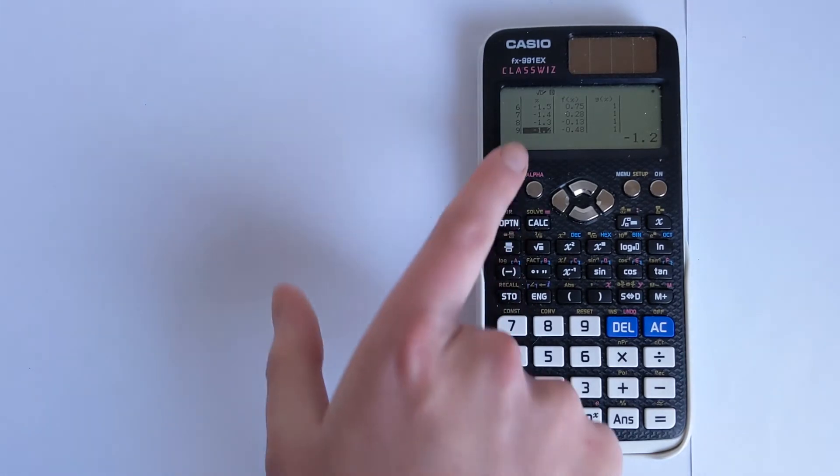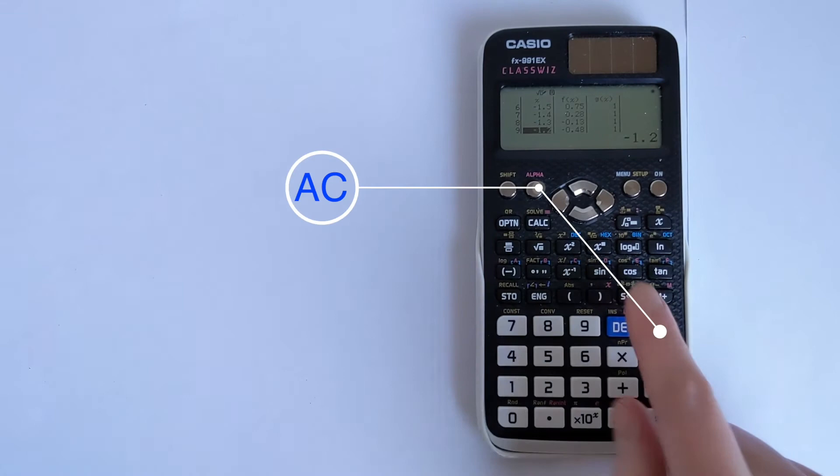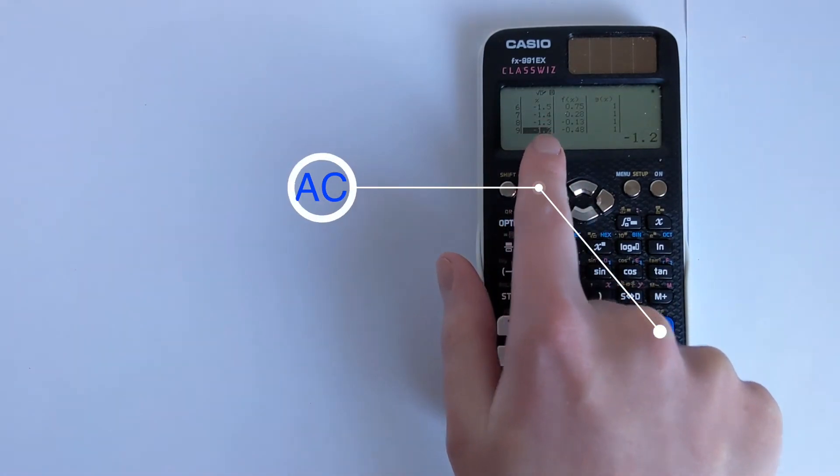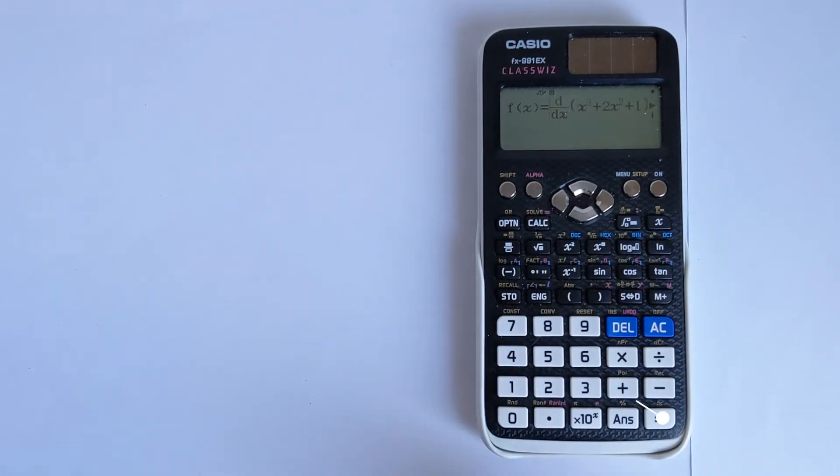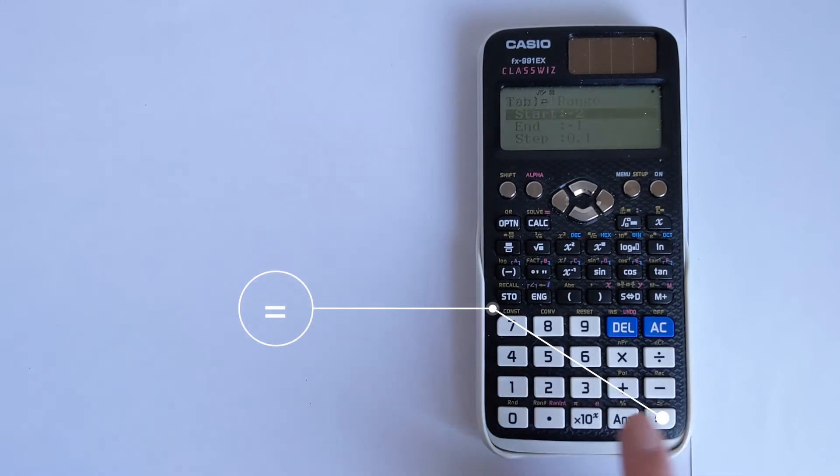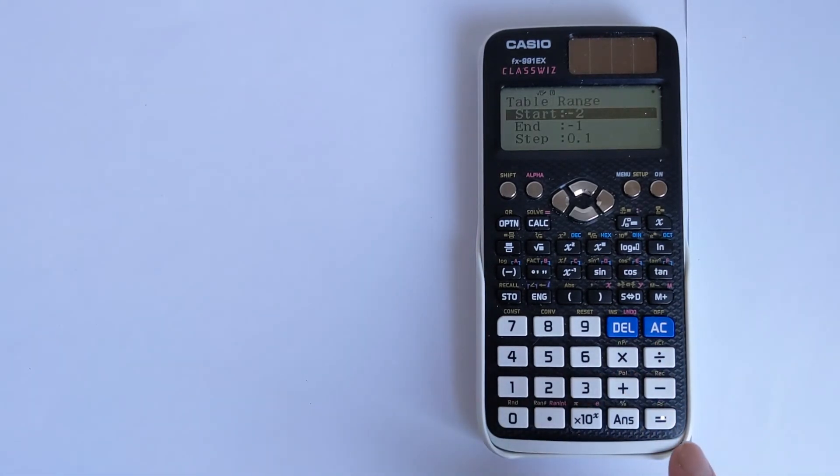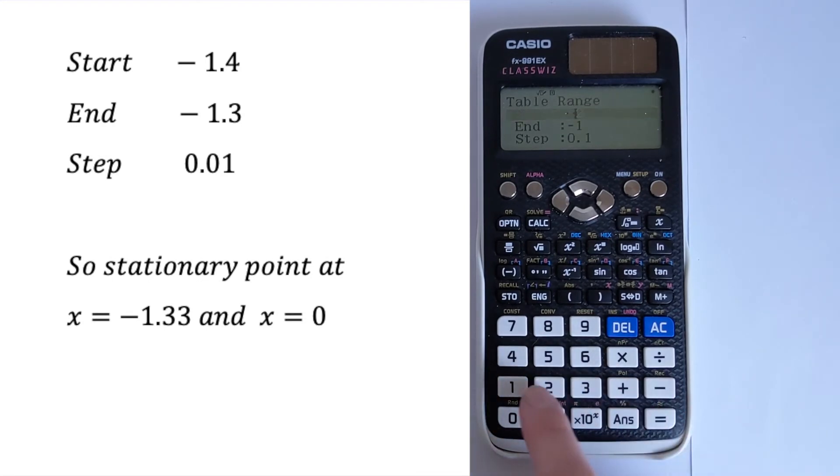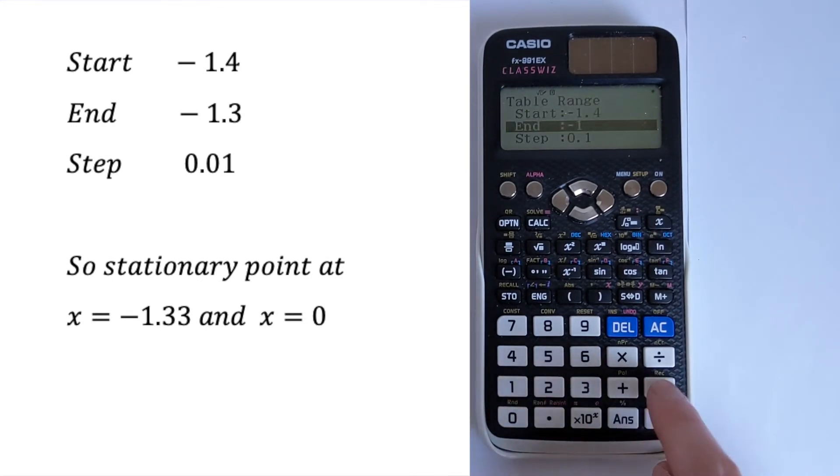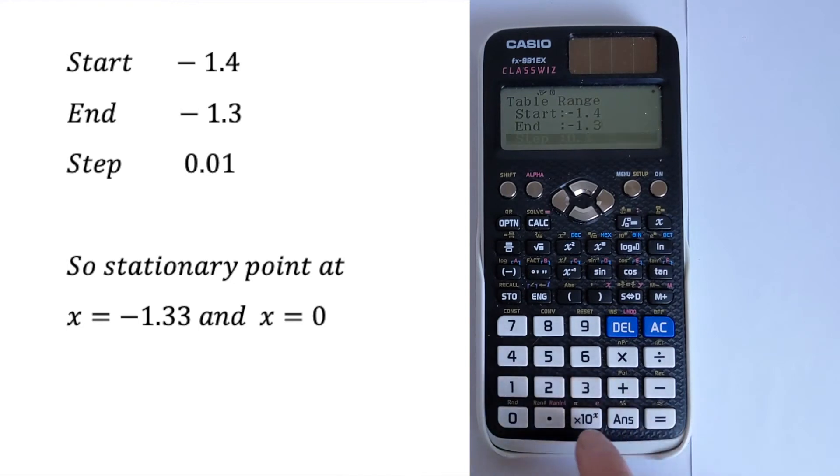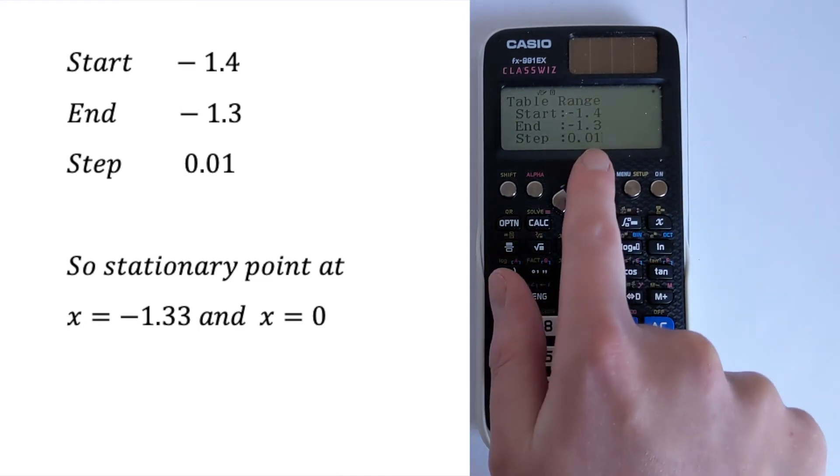And what that tells you is there's a stationary point located somewhere between -1.4 and -1.3. So what we can do is zoom in a little bit more. So let's press AC remembering -1.4 and -1.3. So we get rid of that. Press equals, press equals. We're not changing any of that. And we want to look between those two values. So we want to start at -1.4, go to -1.3, and let's do a step that is a tenth of that. So we'll go up in 0.01.